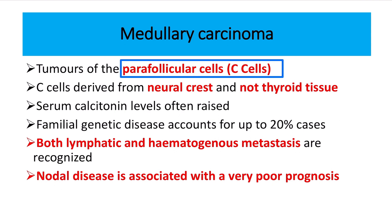The C cell is of ectodermal origin, from the neural crest — not the thyroid tissue itself. The C cell is actually not native to the thyroid gland. It is derived from the ectoderm; it is a slippage of the ectoderm that enters into the thyroid gland.